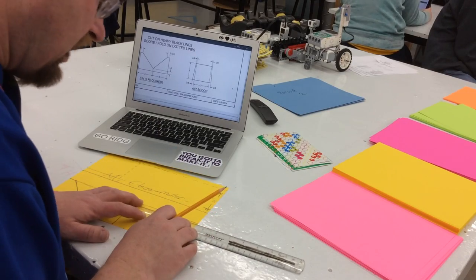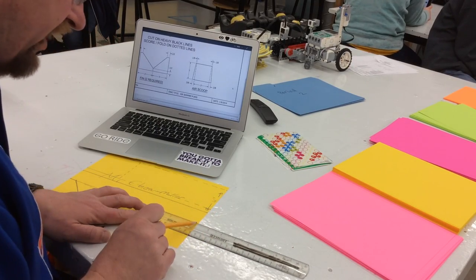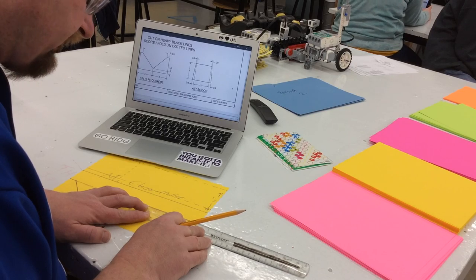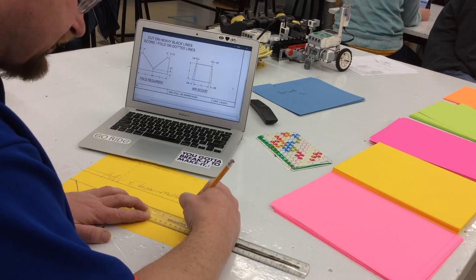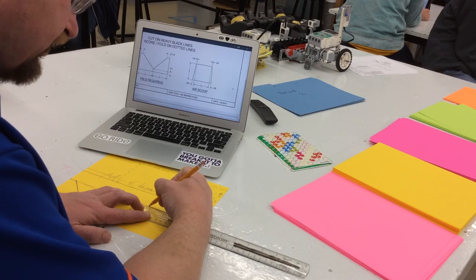I'm going to do the same thing at the top. Put my 4 inch mark right on the edge. I'm going to make a mark at the 3 inches and I'm going to make a mark at the 0 inches.